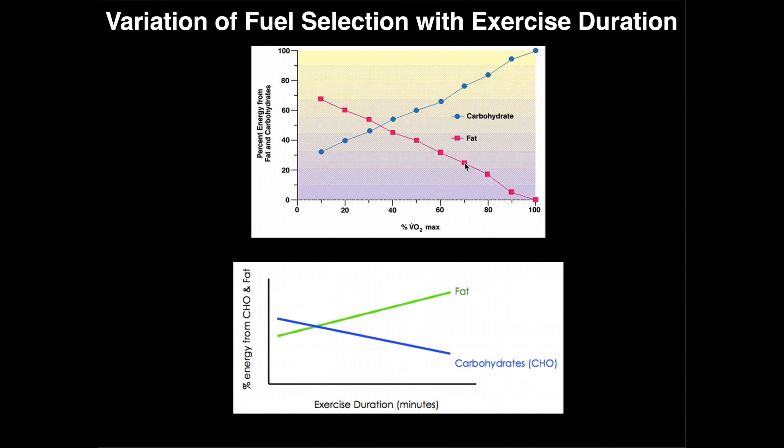You can see from this graph that in general, as we increase the intensity of the exercise from rest, which is about 10%, all the way up to 100%, we drop the amount we rely on fat to where at 100% of VO2 max we're really not relying on fat at all. We also increase the reliance on carbohydrate to the point where at 100% VO2 max we're relying pretty much all on carbohydrate for energy.